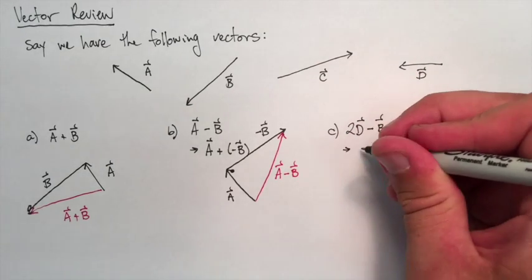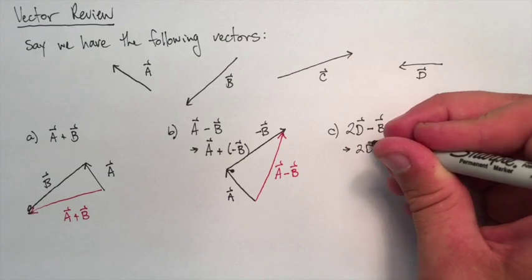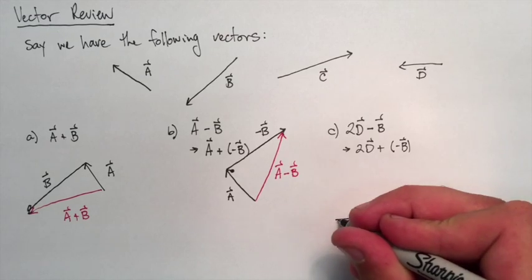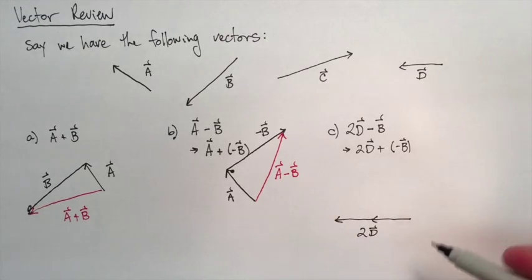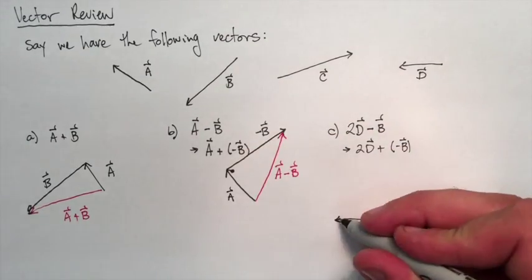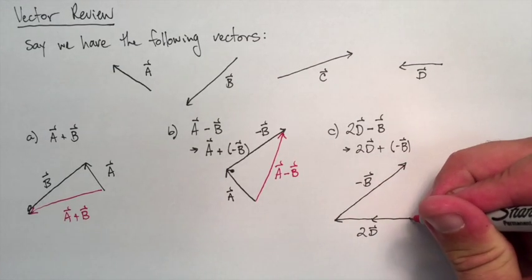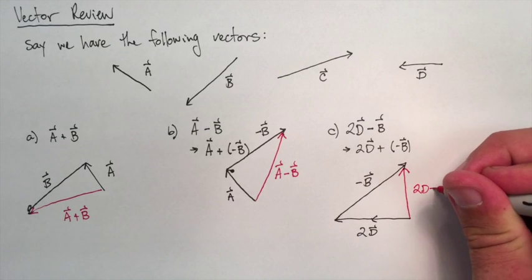Next one here, 2D minus B. Again, we'll rewrite that as 2D plus negative B. So we need 2Ds. So there's both of our Ds. And now we need the negative B again. So that's just B but in the opposite direction. Add them together. And there it is, 2D minus B.